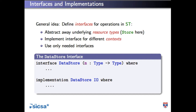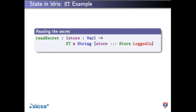We're going to describe the interface and then provide an implementation that allows us to run these things. Inside our interface, we say: if we have some store variable that begins and ends in the logged-in state, we can read the secret. This is like with our door — we could only ring the bell when the door was closed. Our data store: we can only read the secret when the store is logged in.